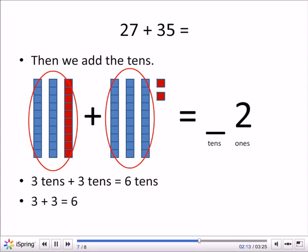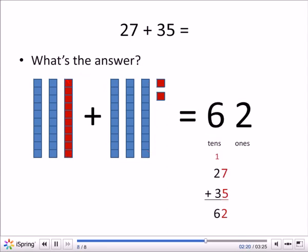Now we can add the 10s. We have 3 tens plus 3 tens. And 3 plus 3 equals 6, so we have 6 tens. So our answer is 62.